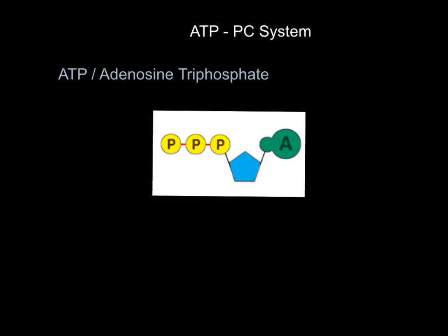Hello folks, welcome to this video on the ATP-PC system. We're talking about energy production - how does the body produce energy to contract our muscles? The substance we're talking about is ATP, or adenosine triphosphate. It's one molecule of adenosine and three phosphates sticking on the end.